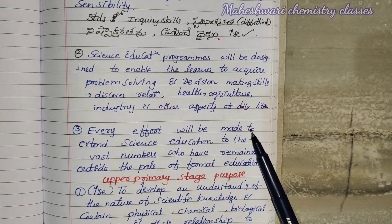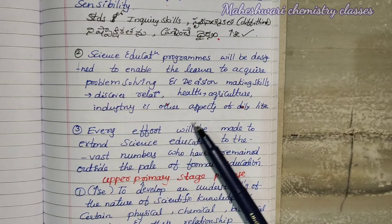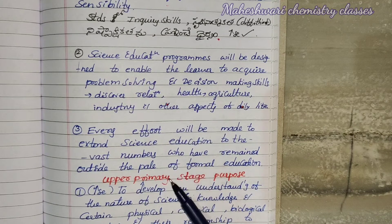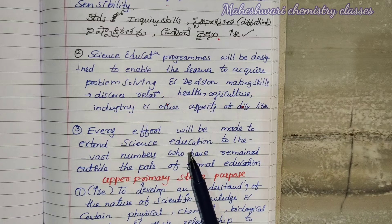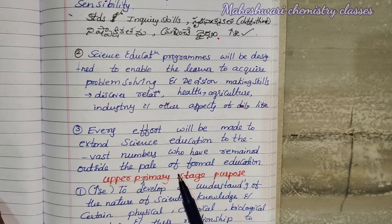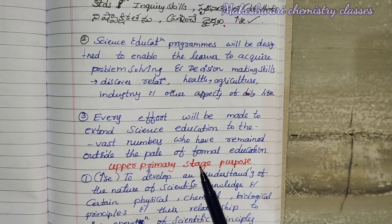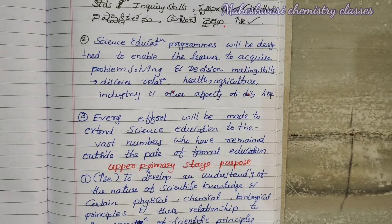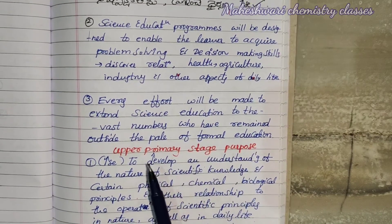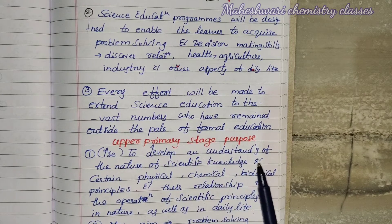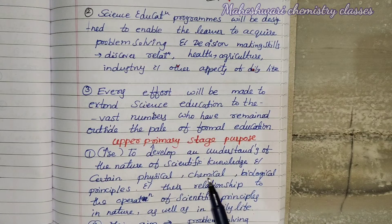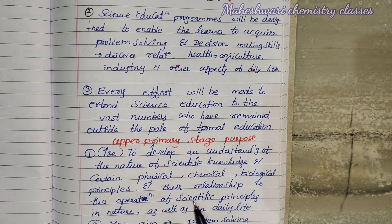Every effort will be made to extend science education outside the pole of formal education. The upper primary stage purpose: to develop an understanding of the nature of scientific knowledge and certain physical, chemical, and biological principles and their relationship to the operation of scientific principles in nature as well as in daily life.